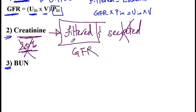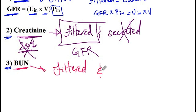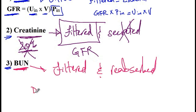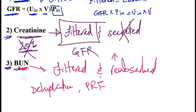BUN is another tool for estimation of GFR. It is also freely filtered but is being reabsorbed, unlike creatinine which is secreted. Conditions that can cause elevated BUN include dehydration or post-renal failure, since both increase BUN reabsorption. Other conditions that raise BUN include high protein diet as well as GI bleeding.